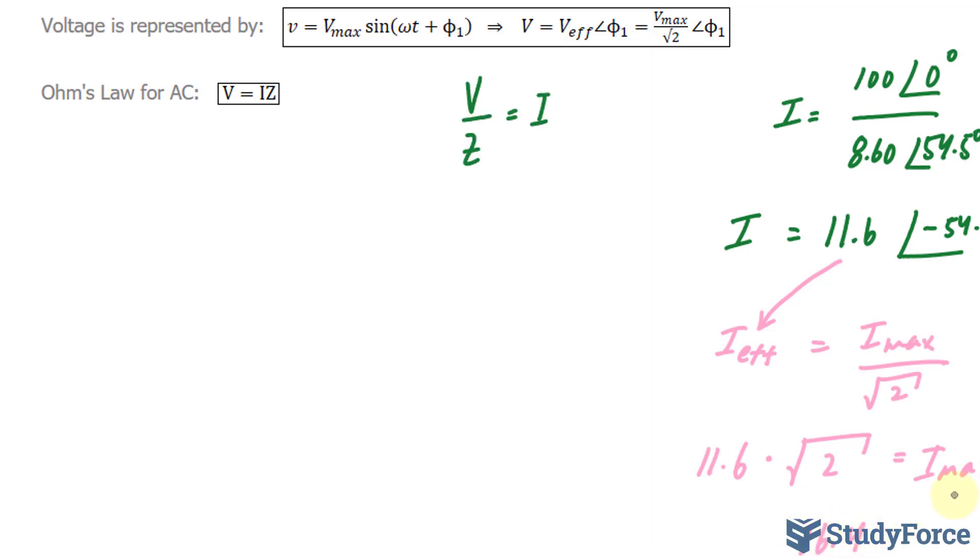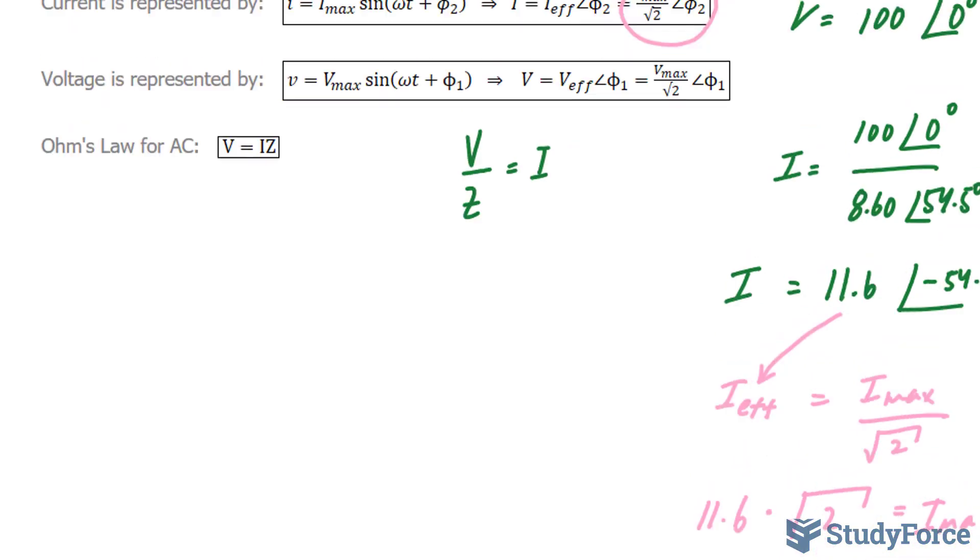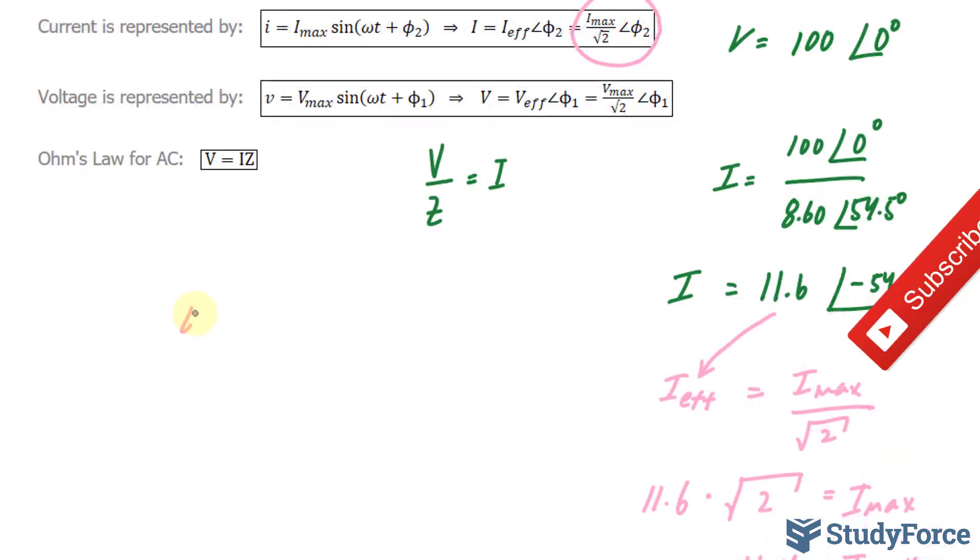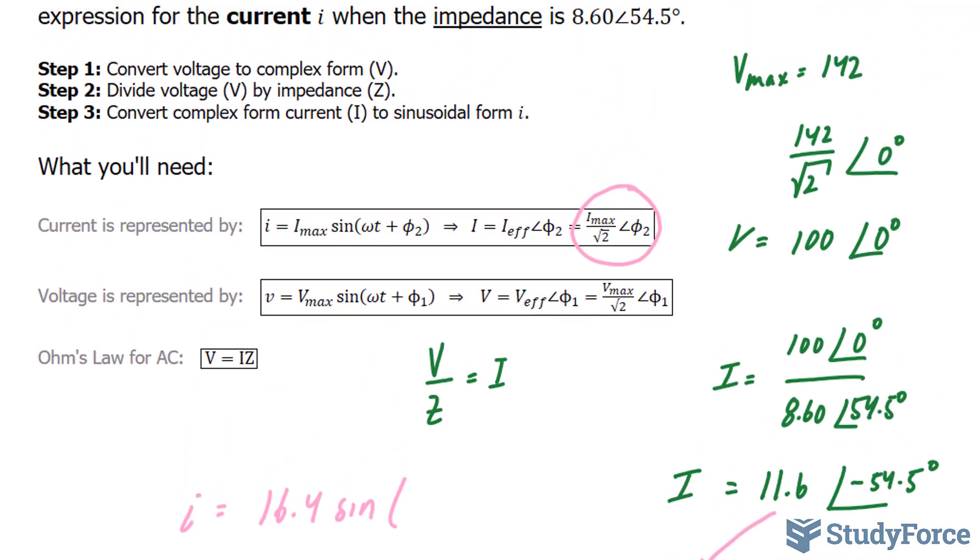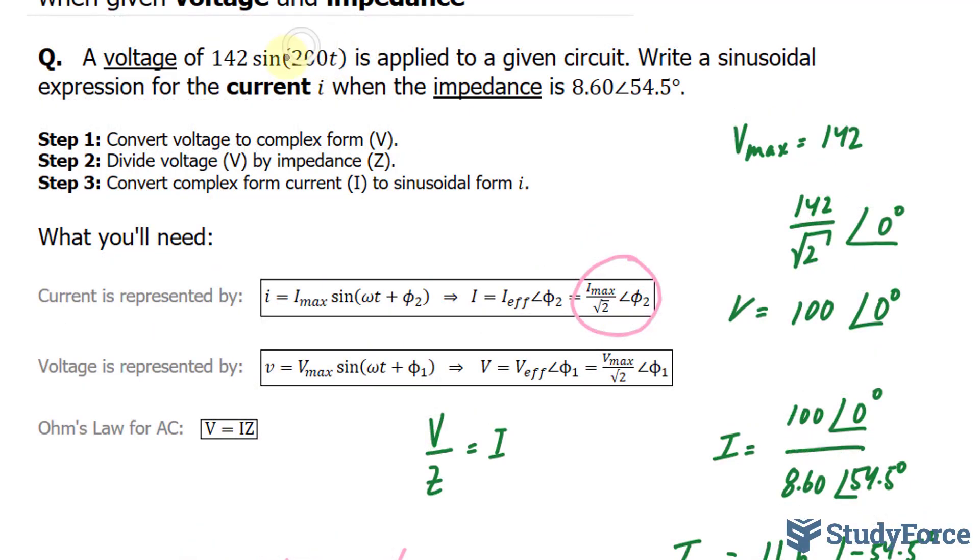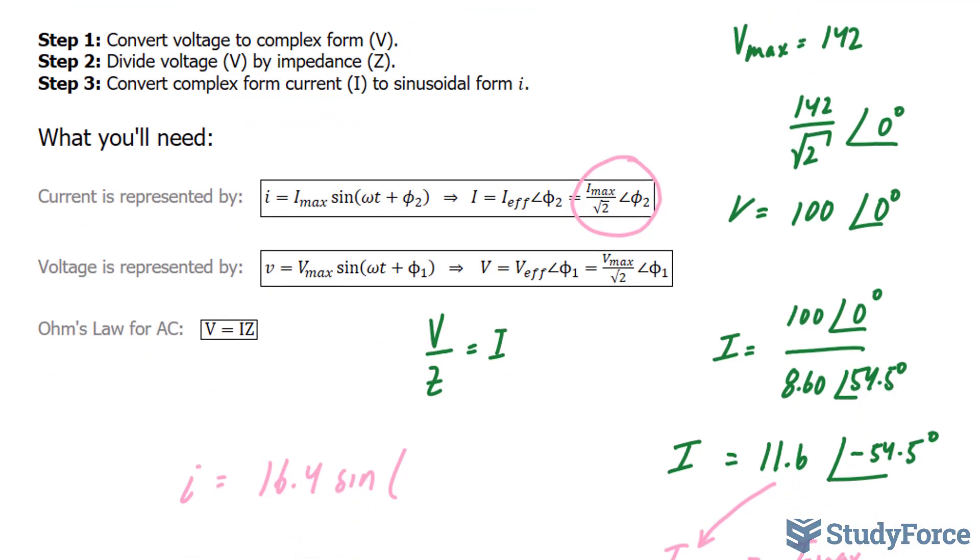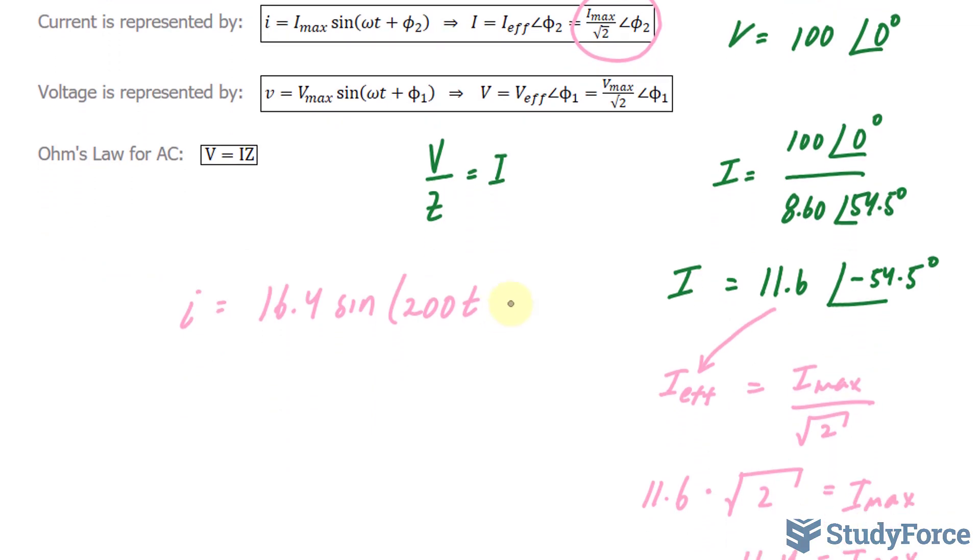So 16.4 represents I_max. Let's write this down: current equals 16.4 sine. Keep in mind our original equation had an angular velocity of 200t—that's omega. Therefore, our current equation is i = 16.4 sin(200t - 54.5°).